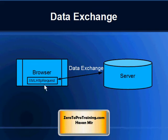We understand that the XMLHttpRequest object sends a request from the client browser to the server. The server then processes the request and sends a response back to the browser.